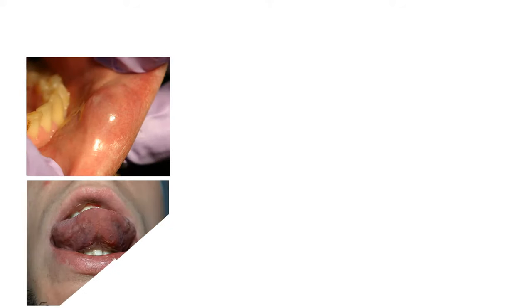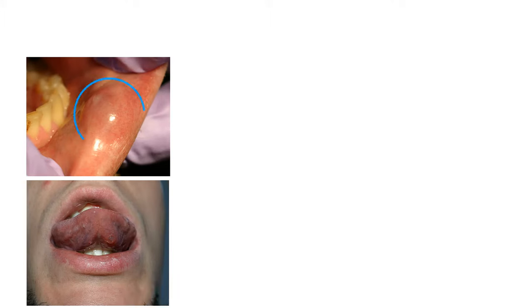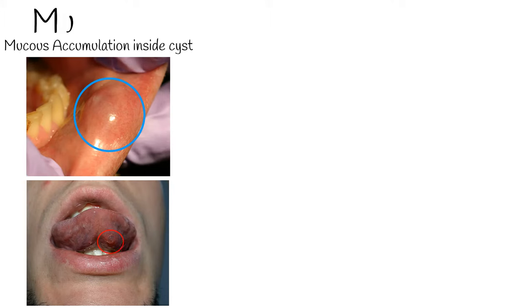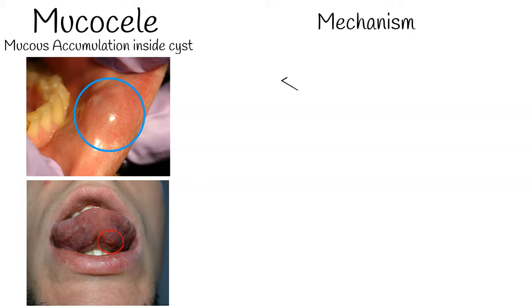Mucocele is a common disorder of minor salivary glands which arises due to mucus accumulation resulting from their alteration. It is the most common lesion of the oral mucosa. The main mechanism is a ruptured salivary gland duct, usually caused by local trauma, or obstruction of the salivary duct, causing mucus retention and cyst formation.